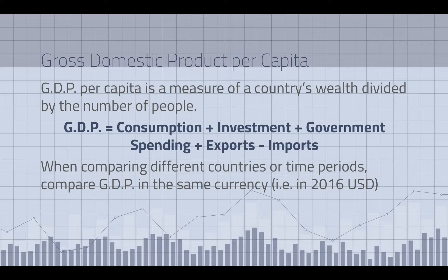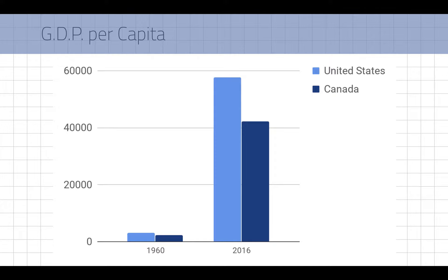Gross domestic product is all the money that's been generated: individual consumption, investment into businesses and stock markets, government spending, products that have been exported to other parts of the world — but we subtract things that have been imported because that's dollars leaving the country. So it's consumption plus investment plus government spending plus exports minus imports. Here's an example of how the two countries compare — the US is wealthier than Canada.